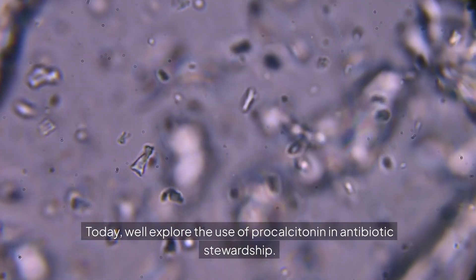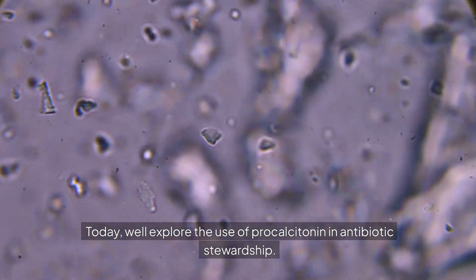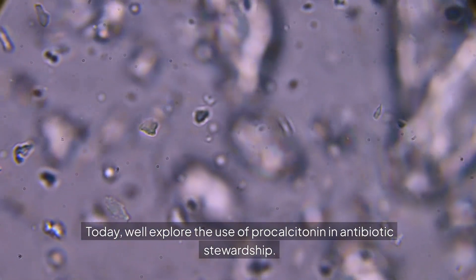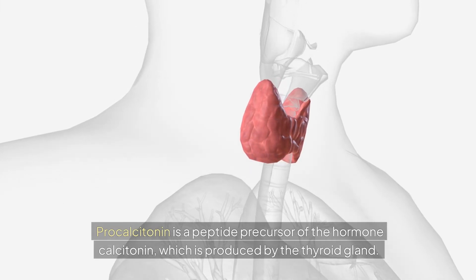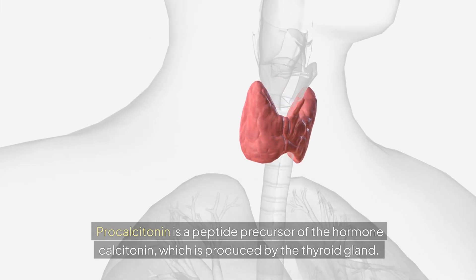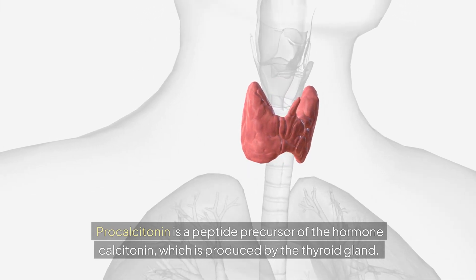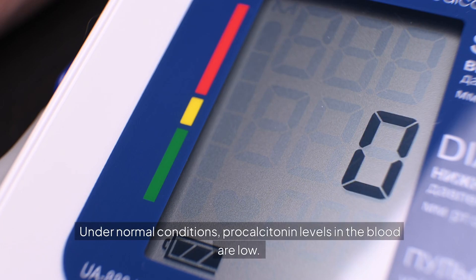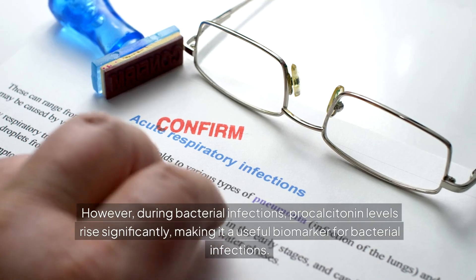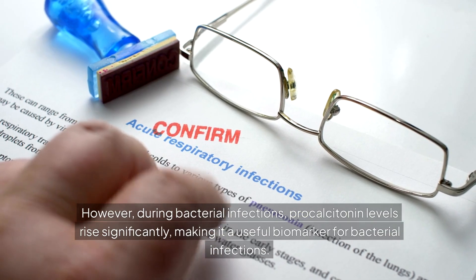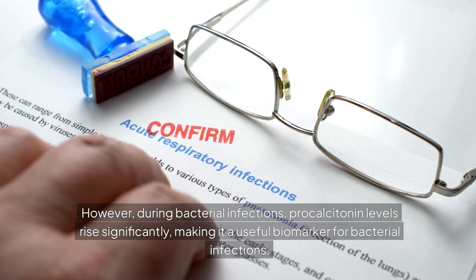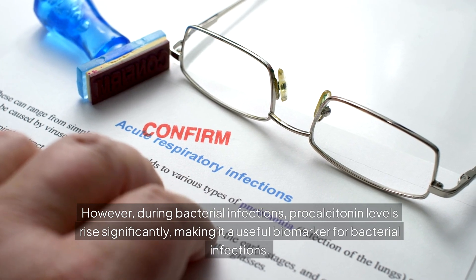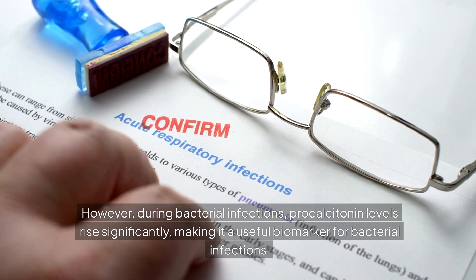Today, we'll explore the use of procalcitonin in antibiotic stewardship. Procalcitonin is a peptide precursor of the hormone calcitonin, which is produced by the thyroid gland. Under normal conditions, procalcitonin levels in the blood are low. However, during bacterial infections, procalcitonin levels rise significantly, making it a useful biomarker for bacterial infections.